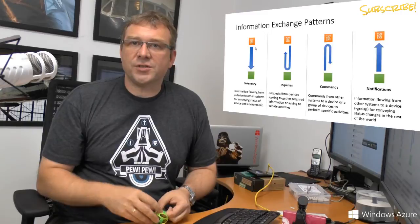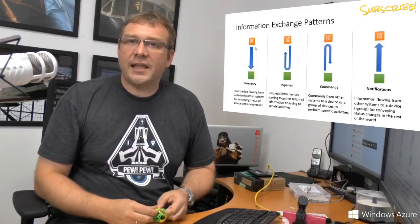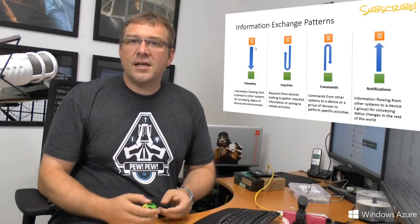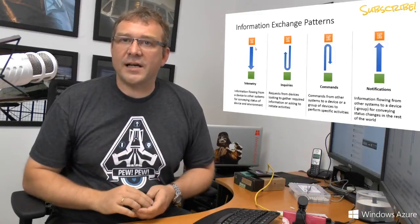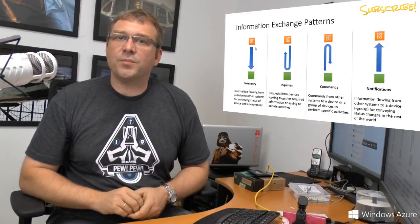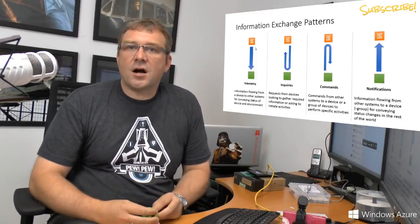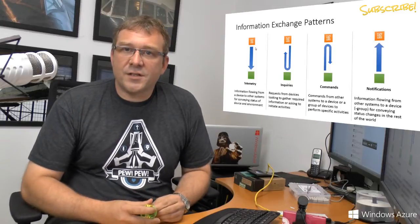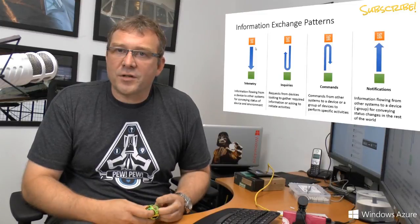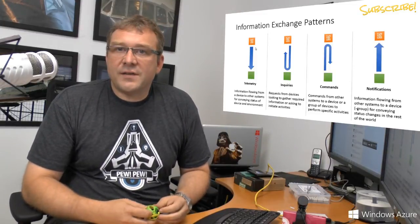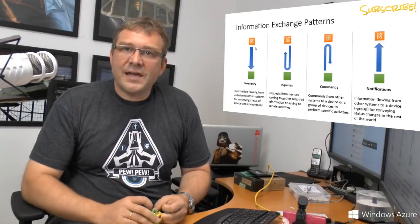Notifications are the opposite of telemetry — data existing in the world that is being told to a device because the device is interested in it or should be interested in it. For example, a navigation system in a car that wants to know about traffic conditions, or a wind park that wants to know about upcoming weather conditions for safety reasons. It's information being conveyed to the devices.